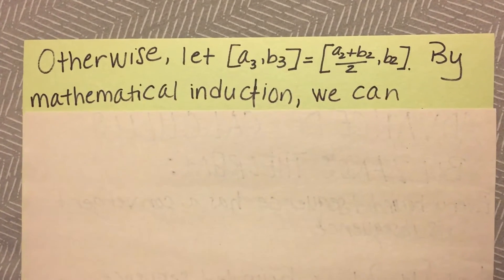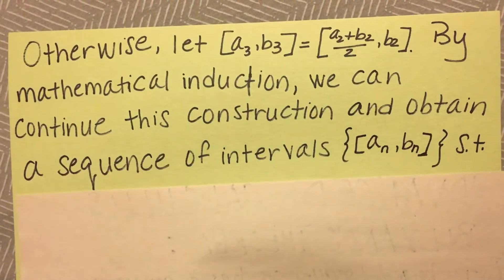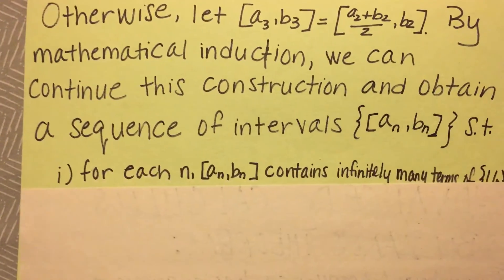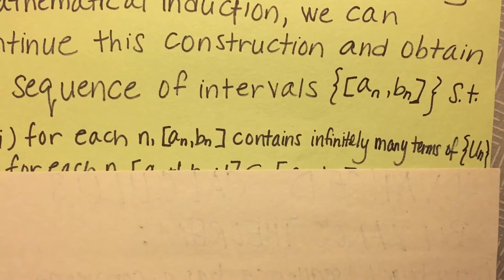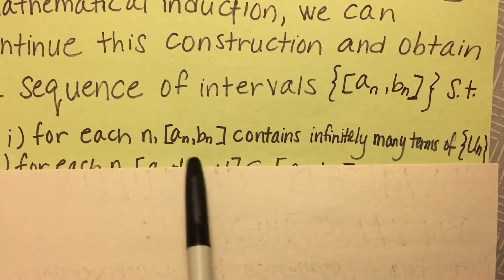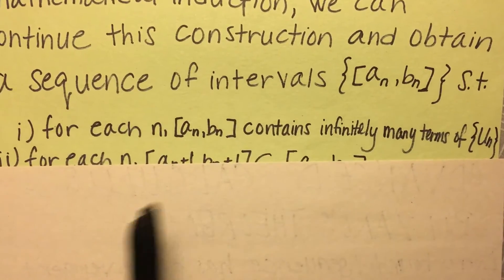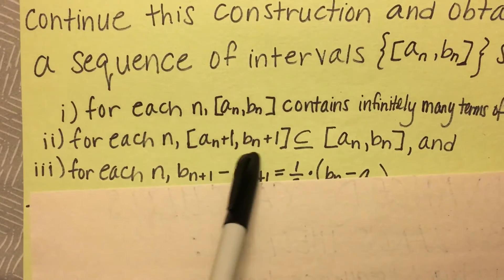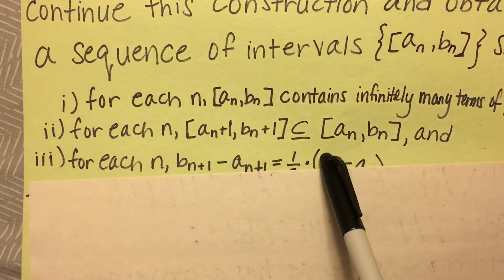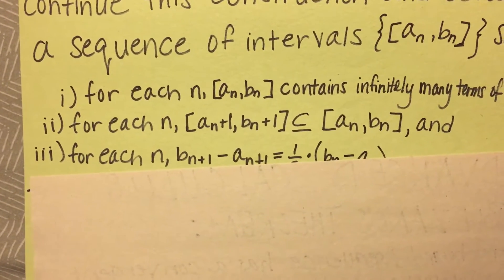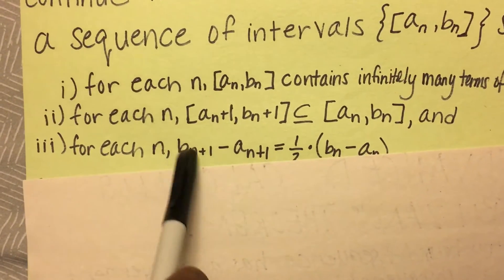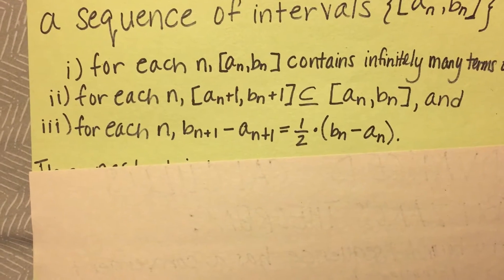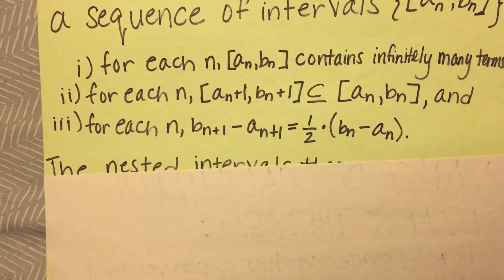By mathematical induction, we can continue this construction and obtain a sequence of intervals A sub N, B sub N such that: first, for each N, the interval [A sub N, B sub N] contains infinitely many terms of the sequence U sub N; second, for each N, the interval [A sub N+1, B sub N+1] is a subset of [A sub N, B sub N]; and lastly, for each N, B sub N+1 minus A sub N+1 equals exactly one half times (B sub N minus A sub N).